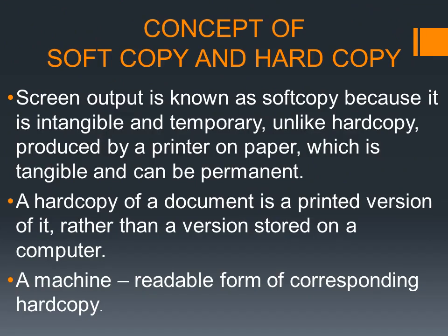Now the concept of soft copy and hard copy. The output on the screen is soft copy because it is temporary — it is volatile, and when the computer is off, it goes. Hard copy is produced by a printer on paper, which is permanent. Hard copy is a printed version of the soft copy which is stored on the computer. A machine-readable form is a soft copy of the corresponding hard copy.